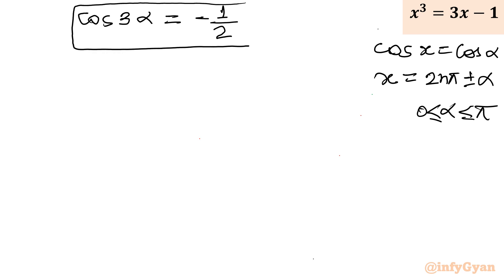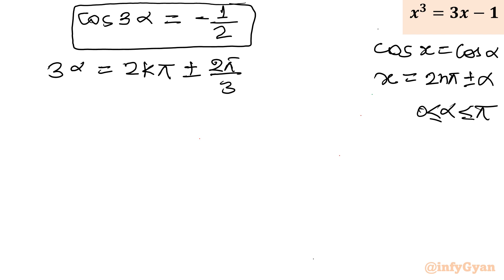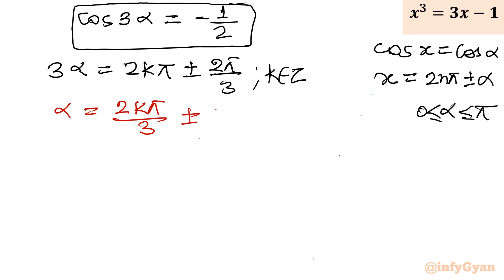Applying the general solution: 3α = 2kπ ± 2π/3, where k belongs to the integers. Dividing through by 3, α = 2kπ/3 ± 2π/9, where k is an integer. This is our ultimate general solution.